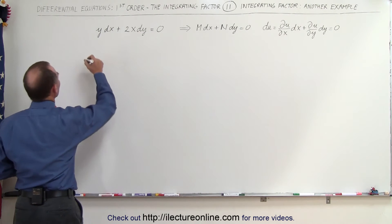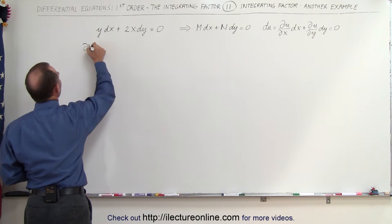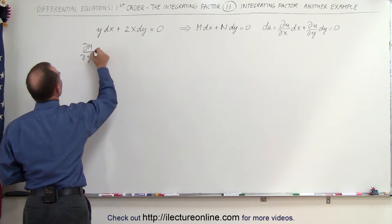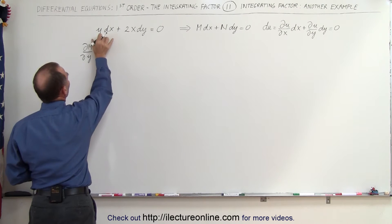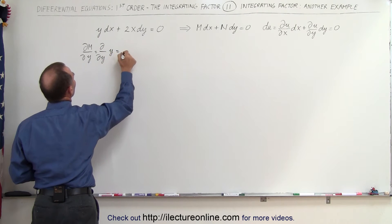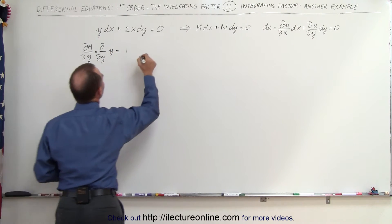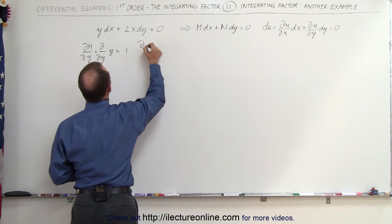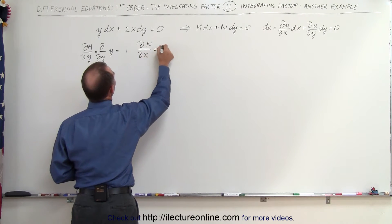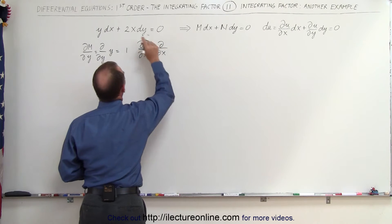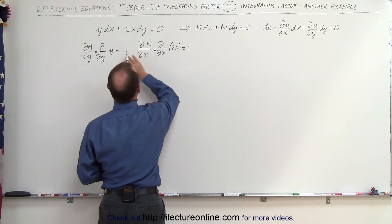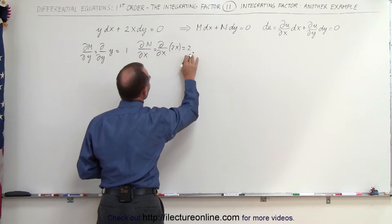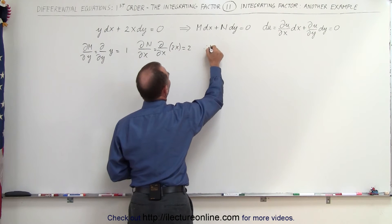We're going to check: the partial of M with respect to y is equal to the partial with respect to y of y, which equals 1. And the partial of N with respect to x is equal to the partial with respect to x of 2x, which equals 2. Since 1 is not equal to 2, the equation is therefore not exact.